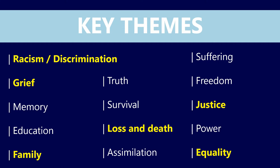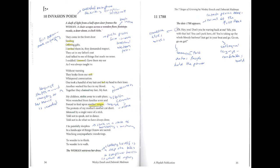In terms of key themes for the scenes today, racism and discrimination will be particularly prevalent through most of them. Grief as well, with family — particularly when it comes to Aunty Grace — along with loss and death. Towards the end we'll look at justice and equality, particularly in scenes like March. There's a real shift away from grief and more into equality, justice, and power as themes.